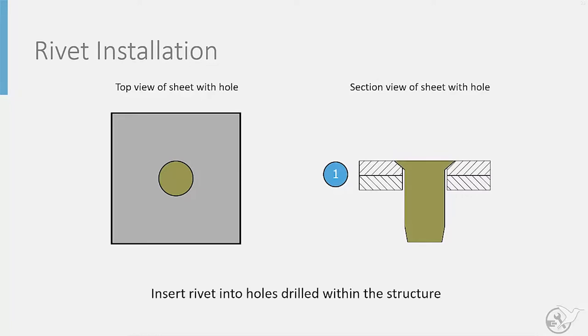First, a rivet is inserted into the holes drilled within the two thin parts being joined. As seen in the illustration, the size of the hole is actually larger than the rivet, making it easier to insert the rivet during this step. With the rivet in place, it is possible to begin the next step.